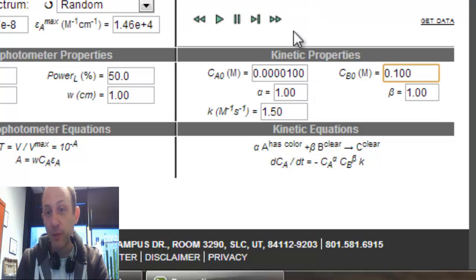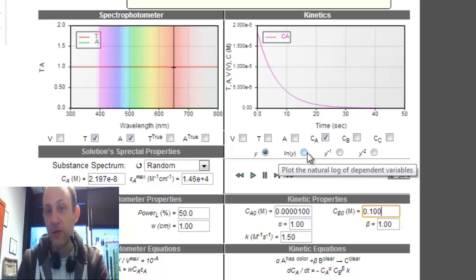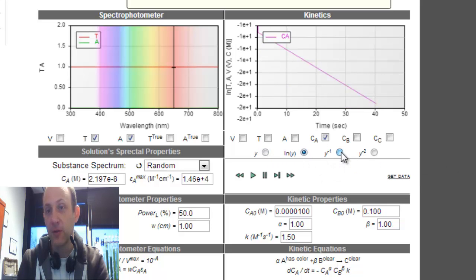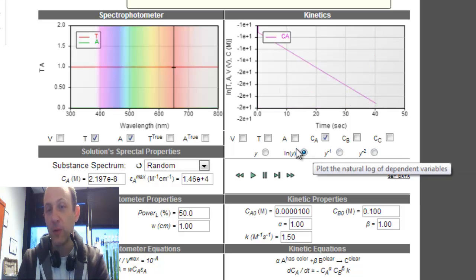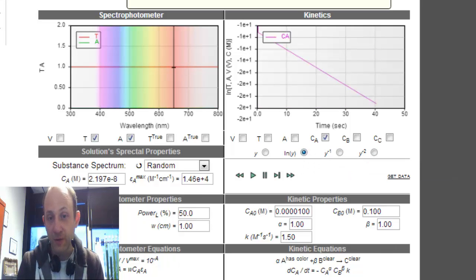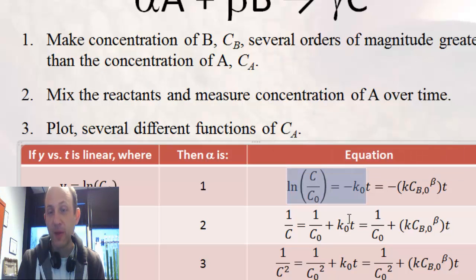So, if I were to plot this, I could plot the concentration, or plot log of the concentration, or plot one over, or plot one over the concentration squared. The only one that's linear is the log of the concentration, and that is because it's first order with respect to alpha.